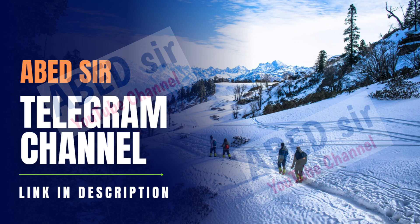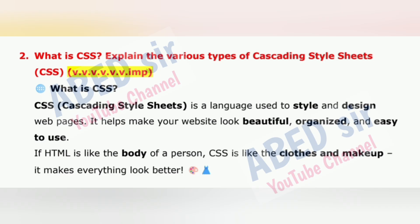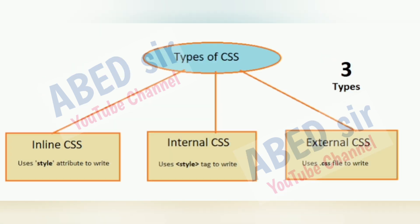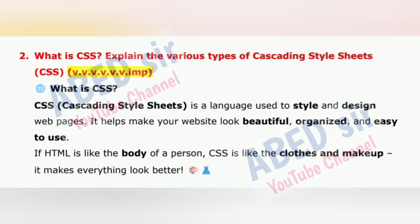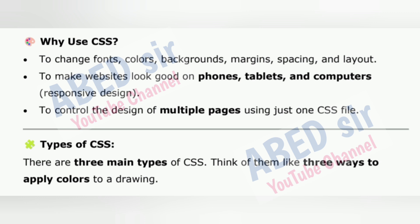Next important long question is 2: What is CSS? Explain the various types of Cascading Style Sheets. CSS, Cascading Style Sheets, is a language used to style and design web pages. It helps make your website look beautiful, organized and easy to use. If HTML is like the body of a person, CSS is like the clothes and makeup — it makes everything look better. CSS is used to change fonts, colors, backgrounds, margins, spacing and layout, to make websites responsive across phones, tablets and computers, and to control the design of multiple pages using just one CSS file.